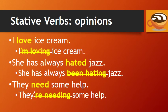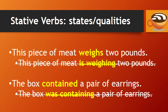Here are some more stative verbs with opinions. Again, because stative verbs describe states of being, not actions, they cannot be used in continuous form. Here are a couple more examples of stative verbs describing states or qualities. 'This piece of meat weighs two pounds,' not 'this piece of meat is weighing two pounds.'